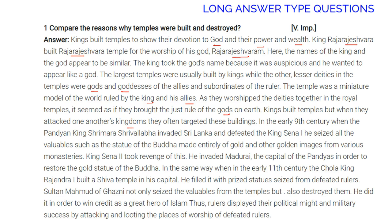In the early 9th century, Pandyan king Shri Mara Shrivallabha invaded Sri Lanka, defeated King Sena I, and seized valuables including a statue of Buddha made entirely of gold from various monasteries. King Sena II took revenge by invading Vaturai, the Pandyan capital, to restore the golden statue of Buddha. Similarly, in the early 11th century, Chola king Rajendra I built a Shiva temple in his capital filled with prized statues seized from defeated rulers. Sultan Mahmud of Ghazni not only seized valuables from temples but destroyed them, seeking credit as a hero of Islam. In this way, rulers displayed their political might and military successes by attacking and looting the places of worship of defeated rulers.